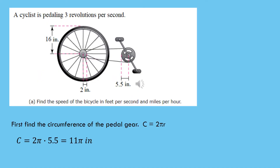Let's figure out the speed of this bicycle if we know the rate of the pedaling. If the cyclist is pedaling three revolutions per second and the gear connected to the pedals is five and a half inches in radius, then we know that that gear has a circumference of 11 pi inches. We can start here, figure out how fast the chain is going, and then find how fast the gear connected to the tire is going, and thus how fast the tire is going. We'll answer both in feet per second as well as miles per hour.